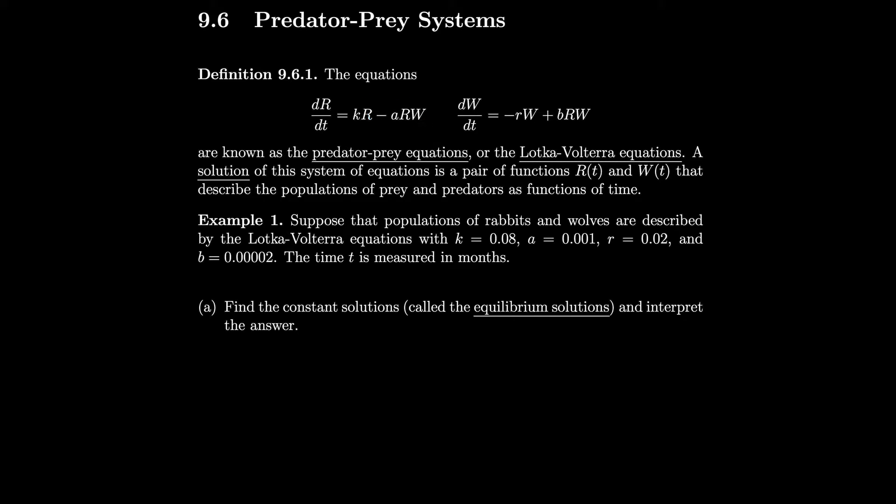Similarly, if we look at the population of wolves with respect to time, we would expect that in the absence of any prey, the population of wolves decreases exponentially. But in actuality, there are usually some prey, like rabbits, so the population of wolves would increase by some number for each rabbit. So we end up with these two equations. Let's do an example with this stuff.